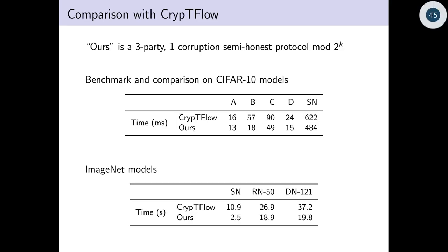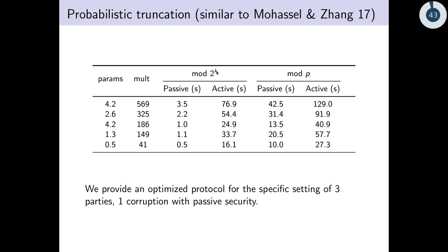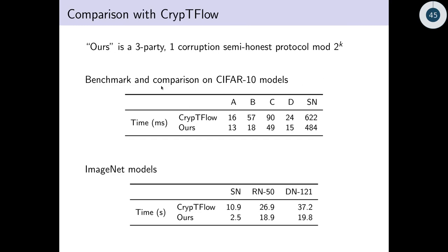Finally, as I mentioned, we compare against CrypTFlow from SMP this year. The protocol we use is passive security modulo power of two with honest majority. We benchmark essentially all the same protocols they do in their paper: the CIFAR-10 models called ABCD which are slightly small, plus SqueezeNet. We perform depending on the network around as well up to twice as good. For the larger networks, these ImageNet networks—for SqueezeNet ImageNet, ResNet, and DenseNet—we perform quite well: two and a half seconds, 18 seconds, 19 seconds versus 10, 26, 37. I think these are all very positive results.